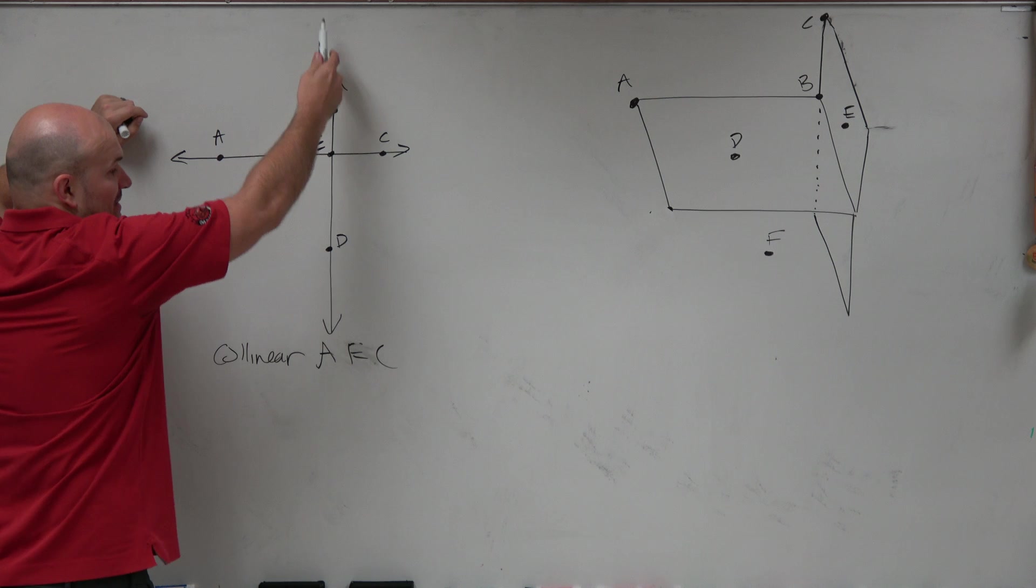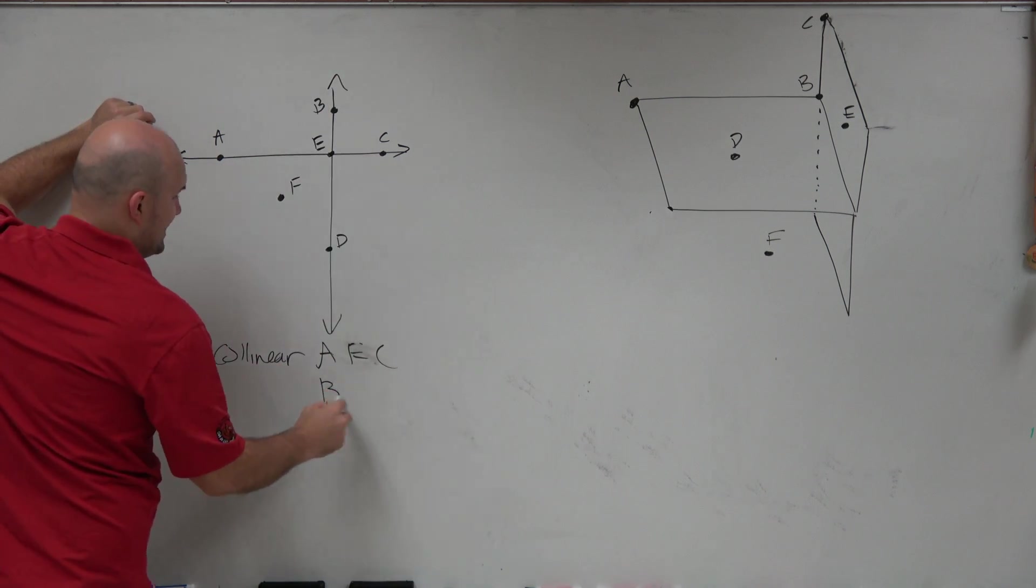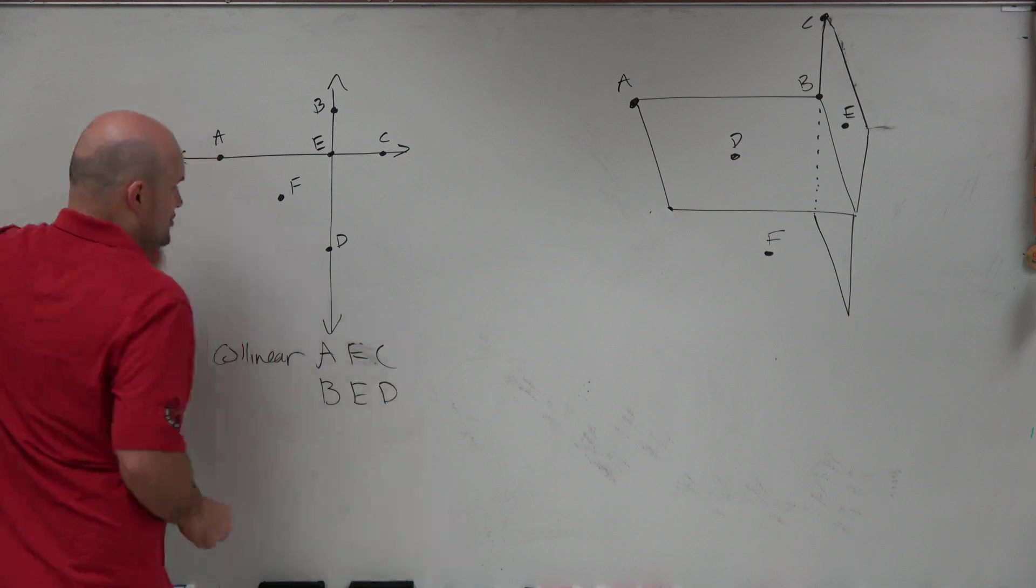As well as another example would be all the points that lie on this line, which would also be B, E, and D.